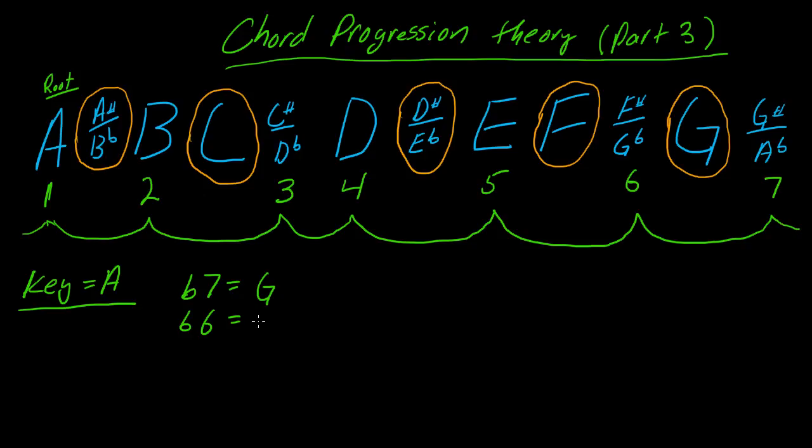Flat 6 would be an F. D sharp or E flat would be between 4 and 5; we would call that flat 5. I'm just going to call this D sharp, doesn't really matter.